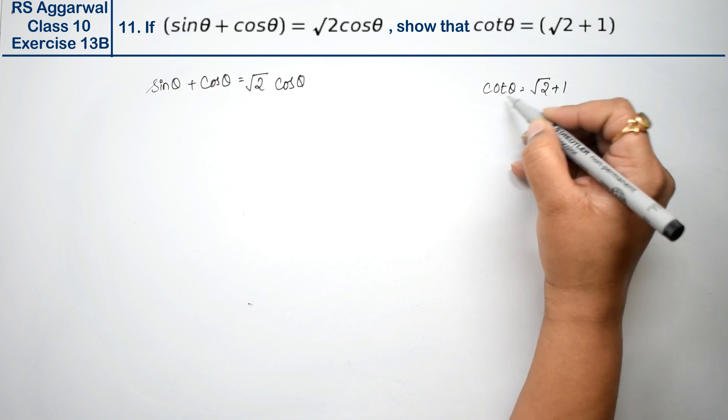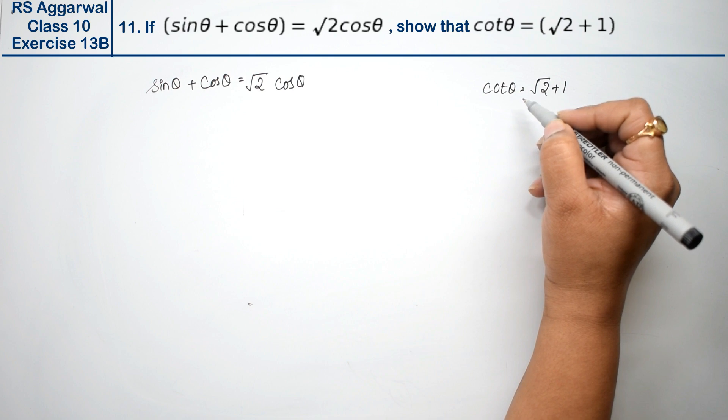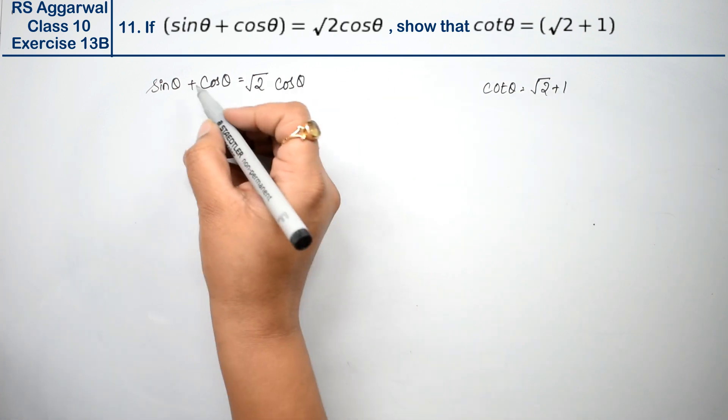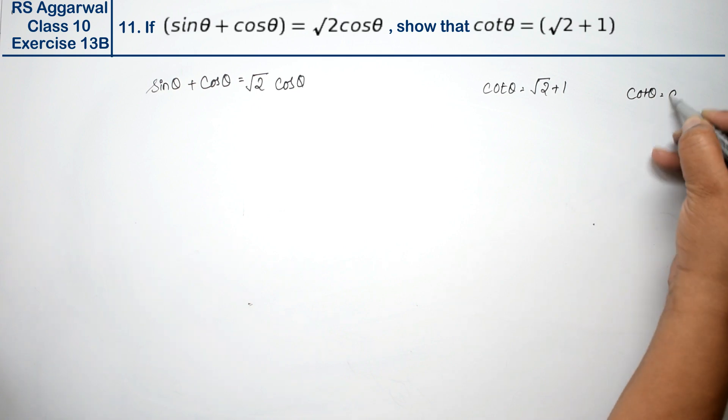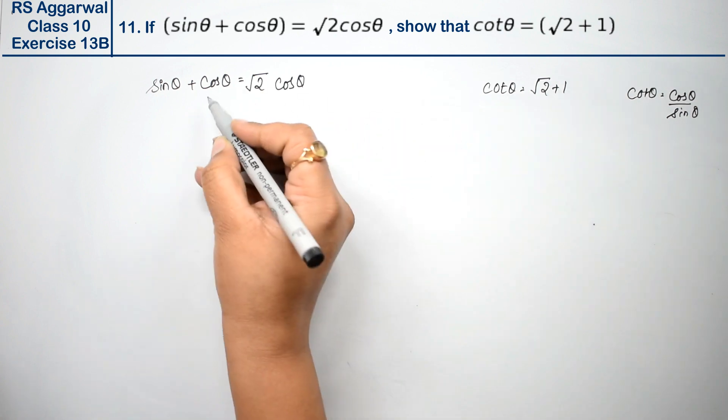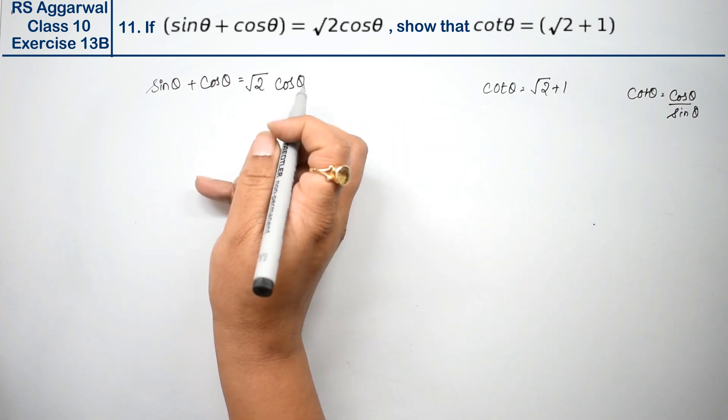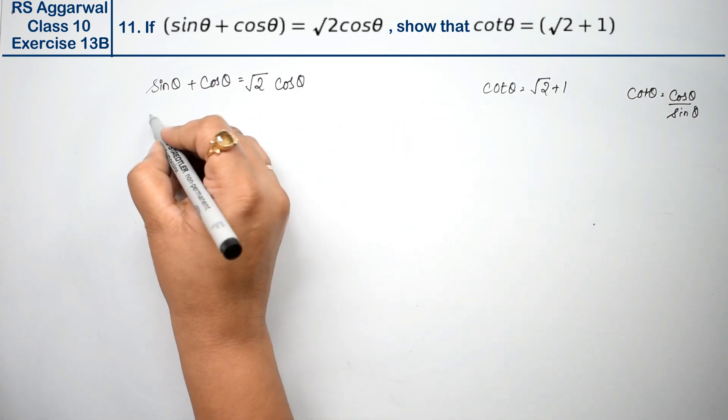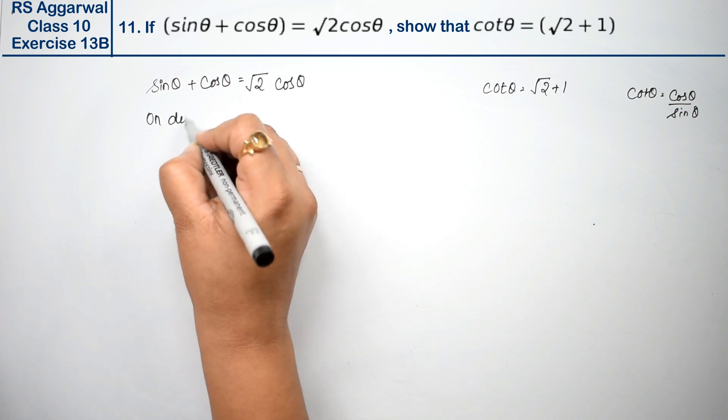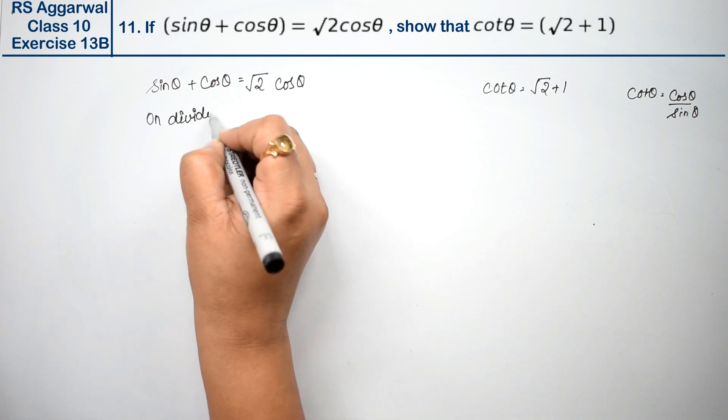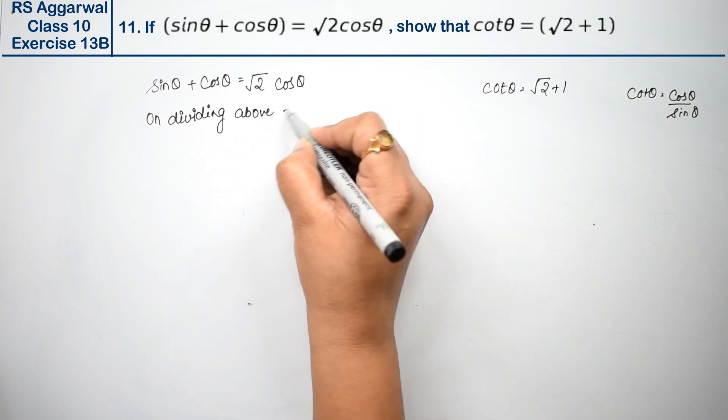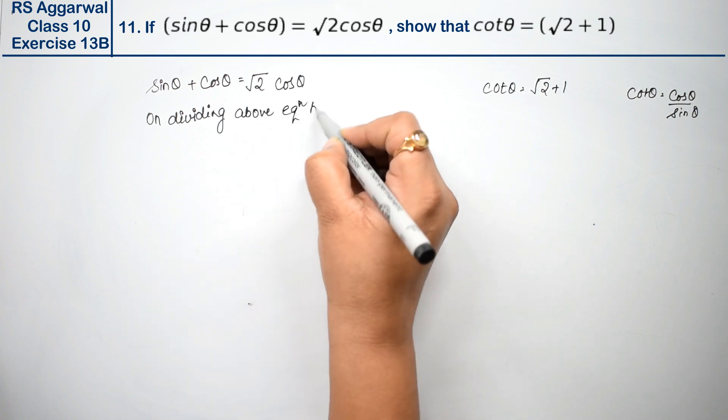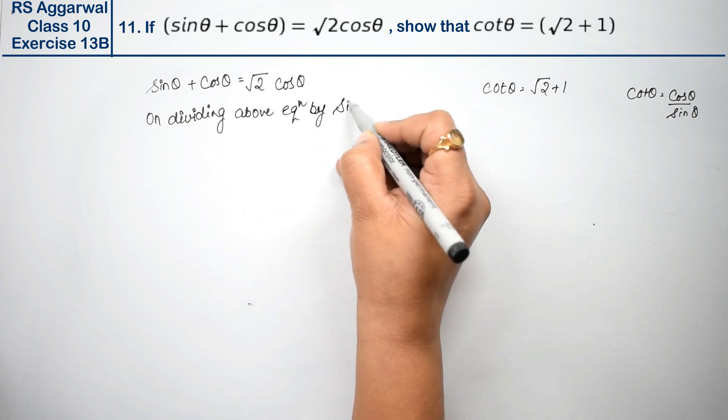So how do we do this? We have cot theta. We know cot theta is cos theta upon sin theta. So we divide the whole expression on the left and right side by sin theta. On dividing the equation by sin theta...